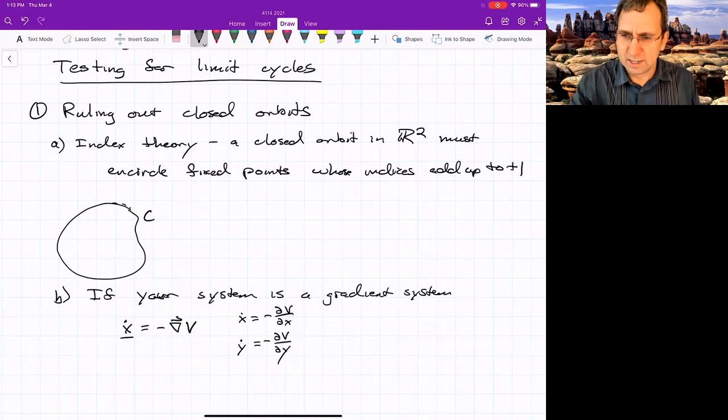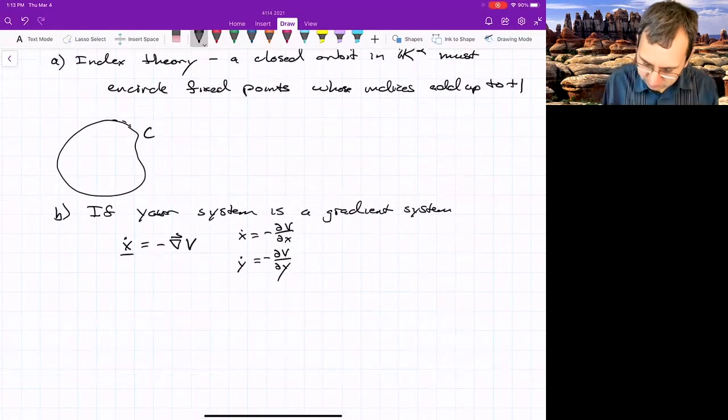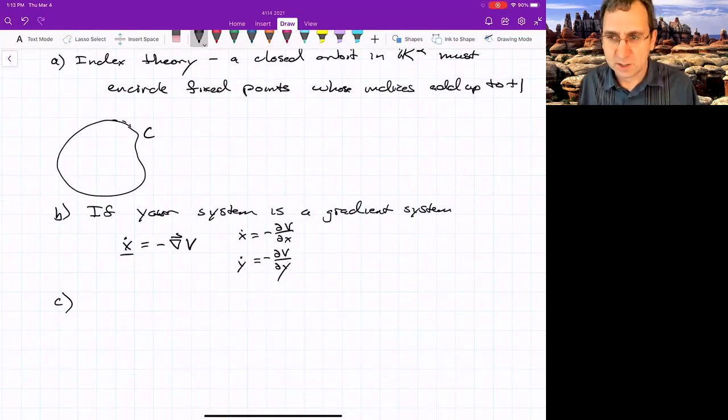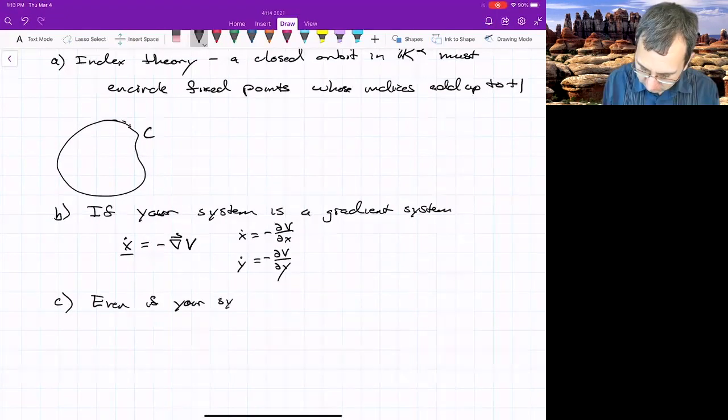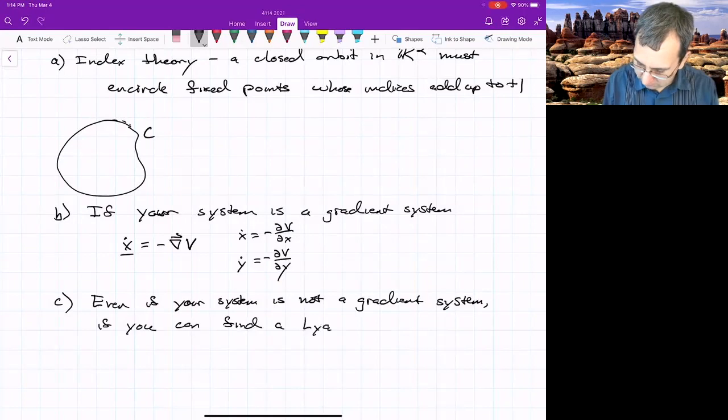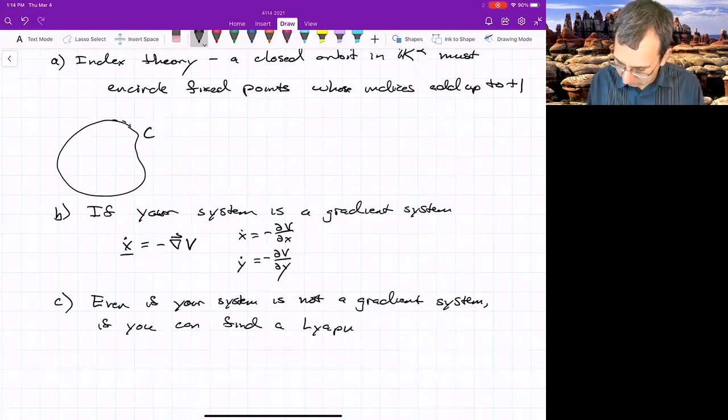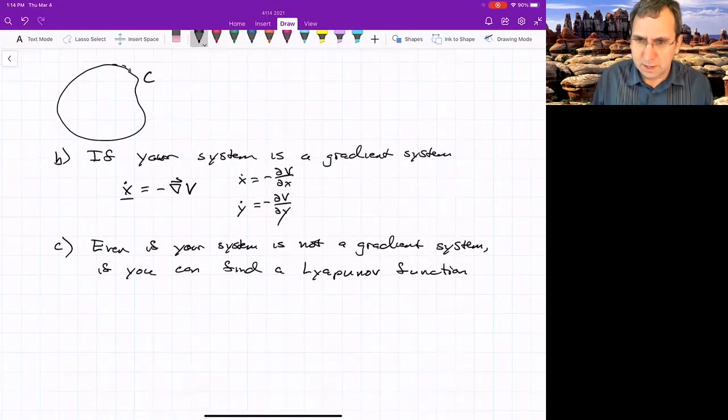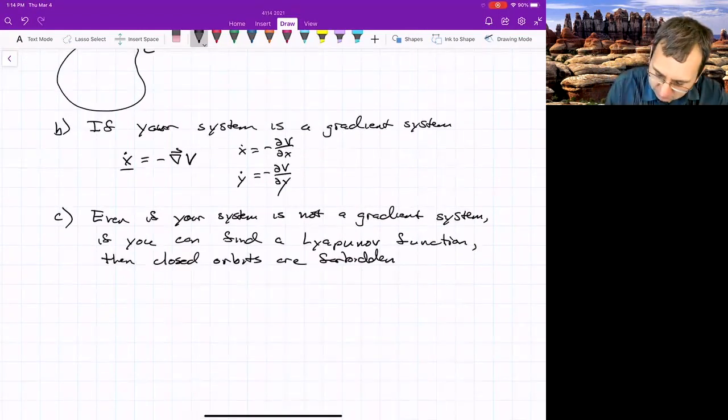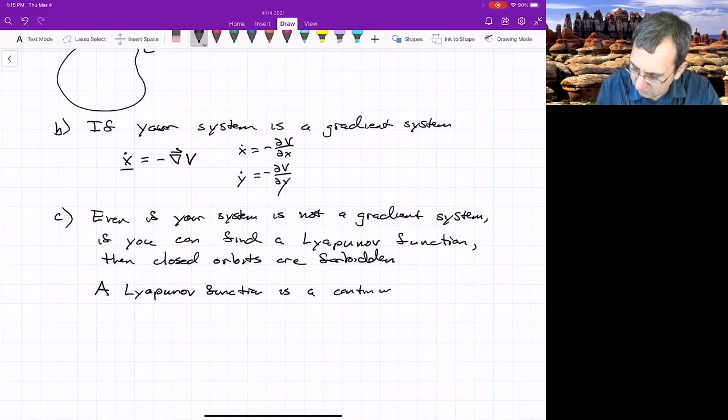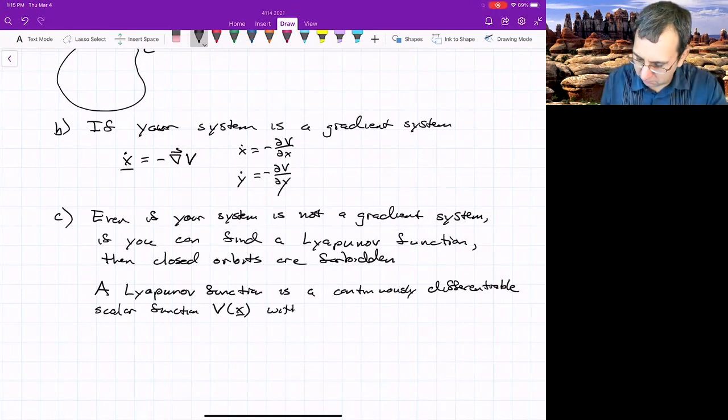You could use this idea for other things that aren't even gradient systems. An adaptation of it is to use a Lyapunov function. So even if your system is not a gradient system, and I spell Lyapunov this way, some people spell Lyapunov with L-I-A. If you can find a Lyapunov function, and I'll tell you what a Lyapunov function is, then closed orbits are forbidden.